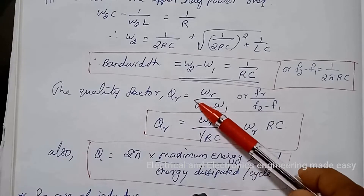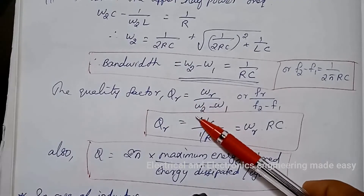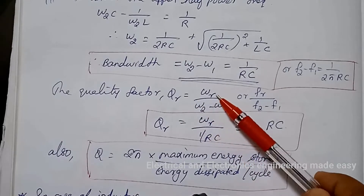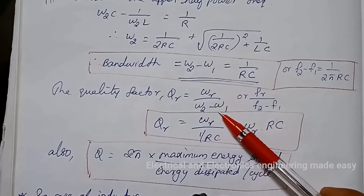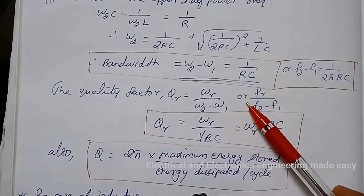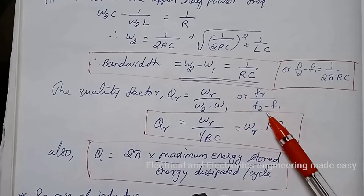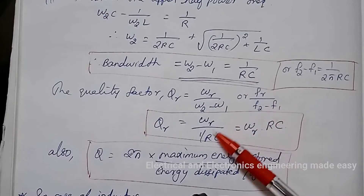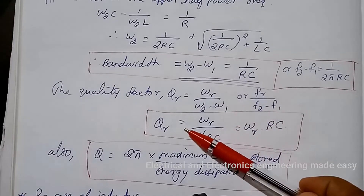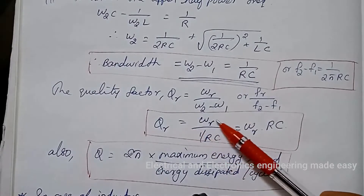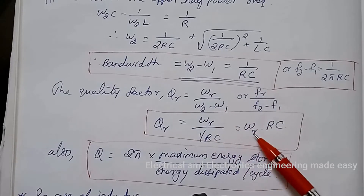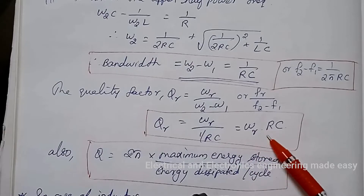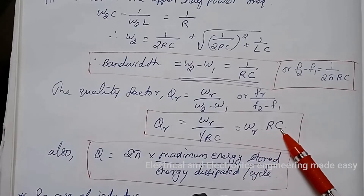The quality factor Q_r equals omega_r divided by (omega_2 minus omega_1), or fr by (f2 minus f1). That equals omega_r divided by 1 by RC, which equals omega_r times RC.